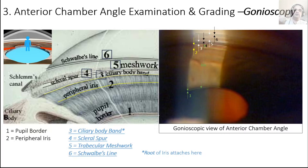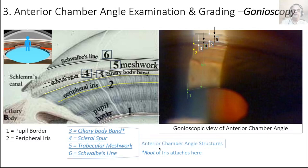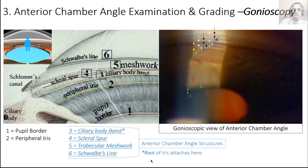Finally, structure 6 is another white line at the top called Schwalbe's line — the termination of the posterior aspect of the cornea's endothelium, beyond which the sclera begins. Structures 3 through 6 make up the anterior chamber angle. Note that in gonioscopy descriptions you'll see 'ciliary body band/root of iris' because the root of the iris inserts into the ciliary body band.